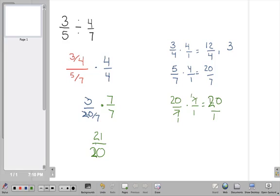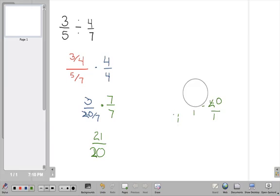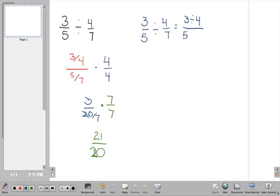What I'd like you to notice here is what I actually did was this. I actually started with this fraction, 3 fifths, divided by 4 sevenths. And I figured out that that's going to be equal to 3 divided by 4, which is right here, over 5 divided by 7, which is right here.